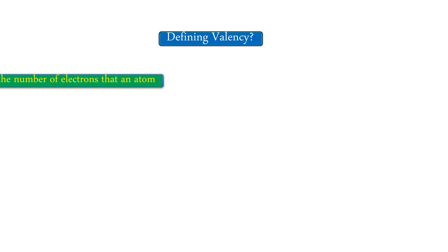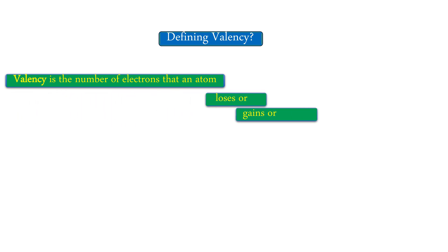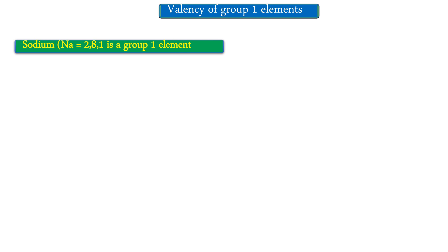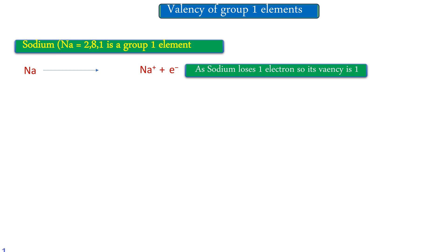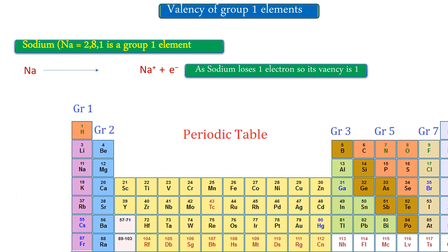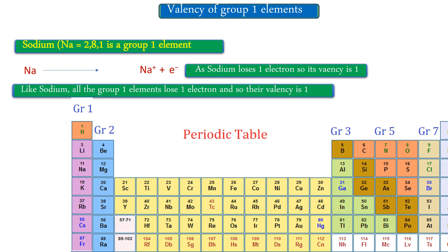We can also define valency in terms of electrons. Valency is the number of electrons that an atom loses, gains, or shares in a covalent bond. If you have access to the periodic table, you can easily get the valencies of elements from it. For group one elements, take sodium with electron configuration 2, 8, 1 — one electron in the outermost shell. Sodium loses one electron, so its valency is one. Not only sodium — all group one elements lose one electron, so their valency is one.